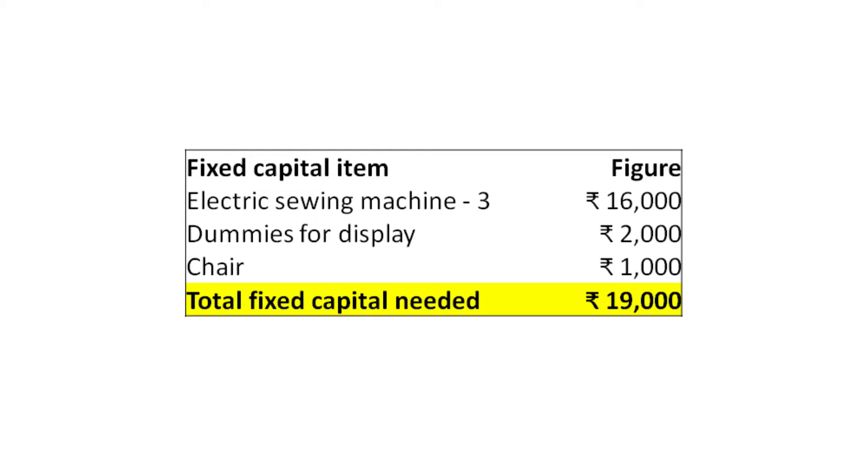Growth often requires entrepreneurs to invest in equipment, other assets and also in the day-to-day running of the business. This requires fixed as well as working capital. Sundari must now consider the impact of her growth strategy on the required capital. As we saw earlier, she needs a new electric sewing machine, dummies to display dresses and some furniture. She estimates the cost of each additional asset and comes up with a forecasted fixed asset section of the balance sheet as seen here.